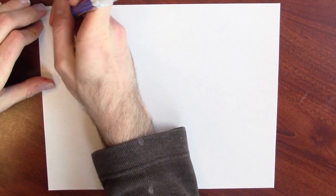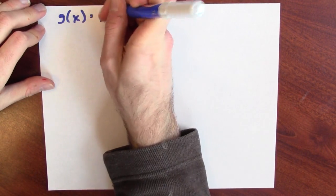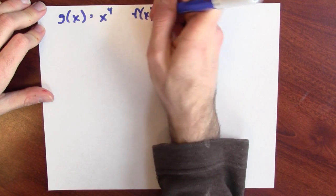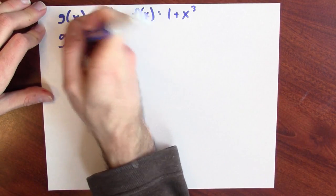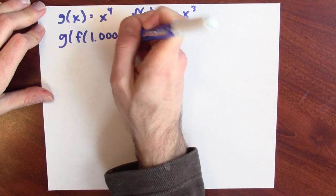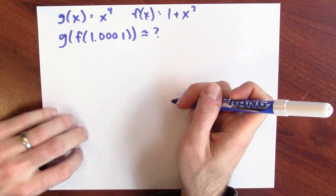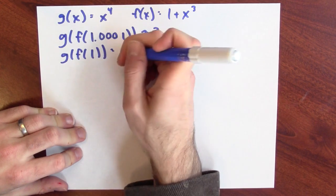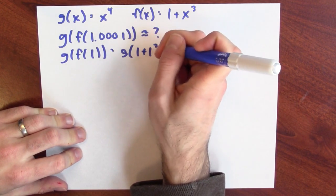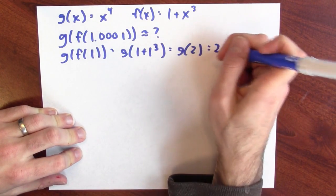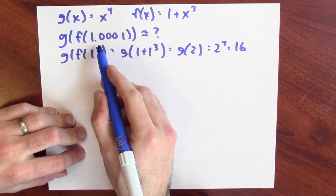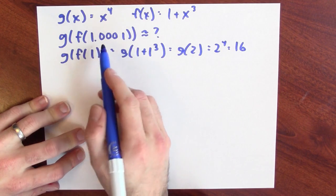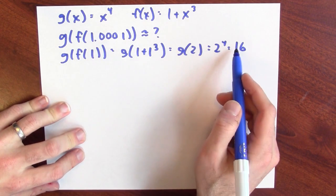Let's try a numerical example. Consider g of x equals x to the fourth power, and f of x equals 1 plus x to the third power. I want to estimate g of f of 1.0001. It's not too hard to calculate g of f of 1. What's f of 1? That's 1 plus 1 cubed, which is 2. So what's g of 2? That's 2 to the 4th, which is 16. So I know g of f of 1.0001 is going to be close to 16. The question is how does wiggling the input up to 1.0001 affect the output of this composition?